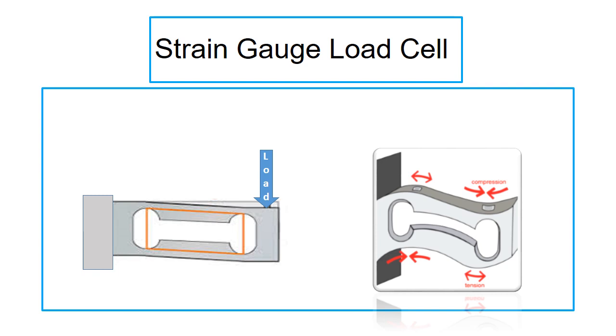In response to the body shape changes, the strain gauge also changes its shape. This causes a change in the electrical resistance of the strain gauge, which can be measured as a voltage change. This change in output is proportional to the amount of load applied.